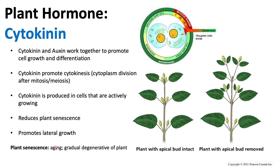Cytokinin also promotes lateral growth — growing sideways. In a plant, we have axillary buds and an apical bud. The axillary buds are located along the sides, while the apical bud is at the very top. The apical bud is a sugar sink that produces auxins, and it is located at the shoot apical meristem — the tip of the plant.